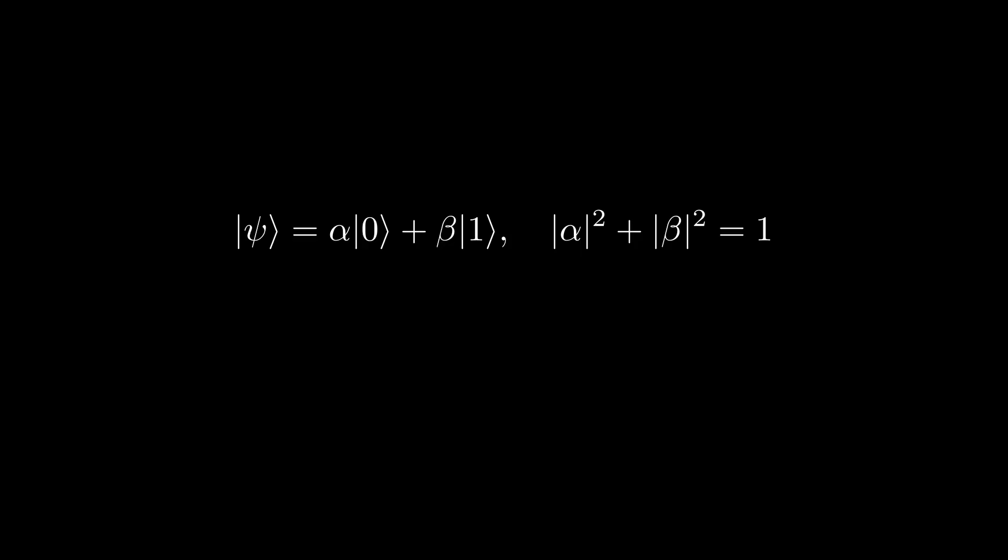Notice that this means that for some real theta, we have that the absolute value of alpha can be parameterized as cosine of theta over 2, and similarly, the absolute value of beta can be parameterized as sine of theta over 2. We use theta over 2 here instead of theta so that we can have theta be between 0 and pi for reasons that will soon become clear.